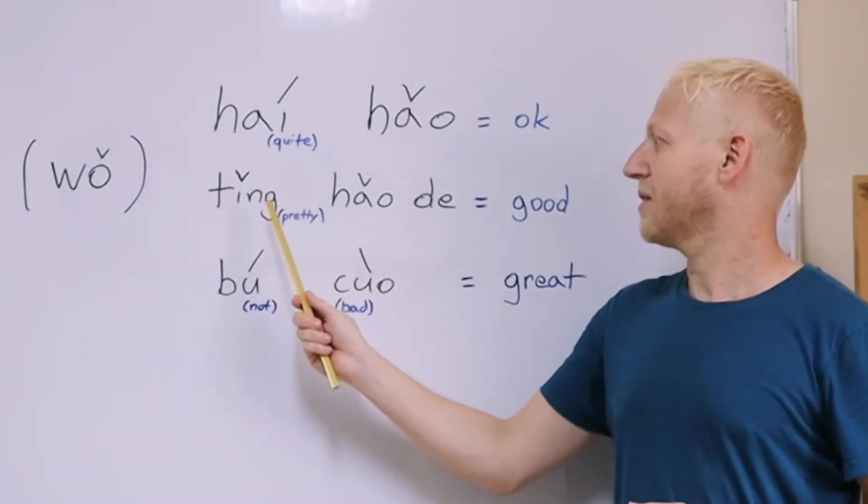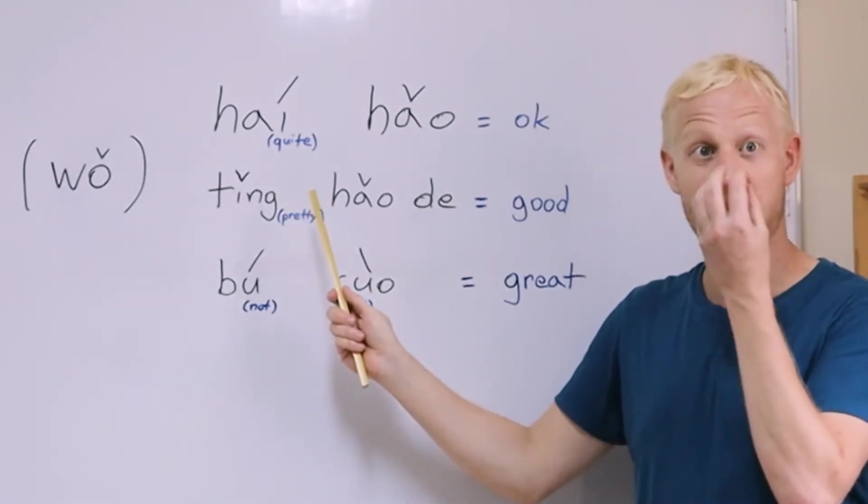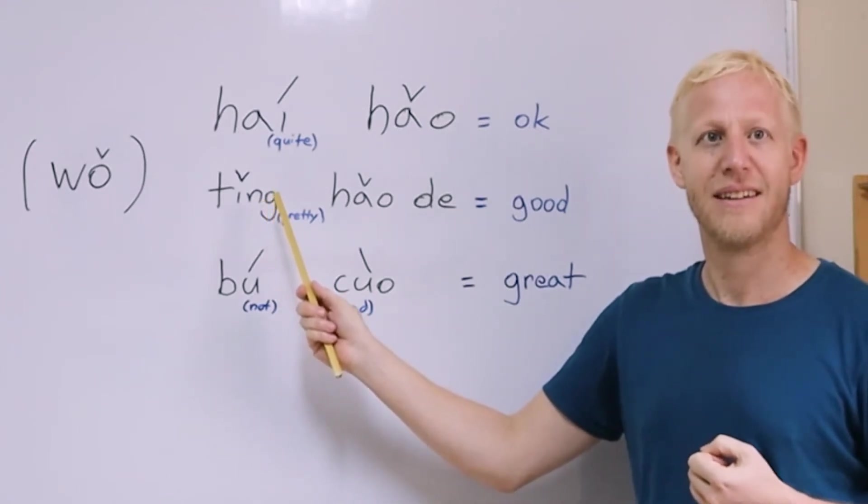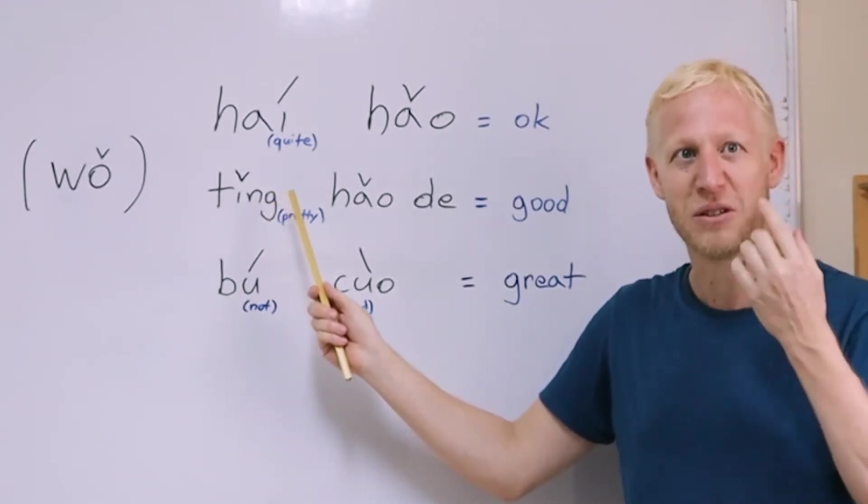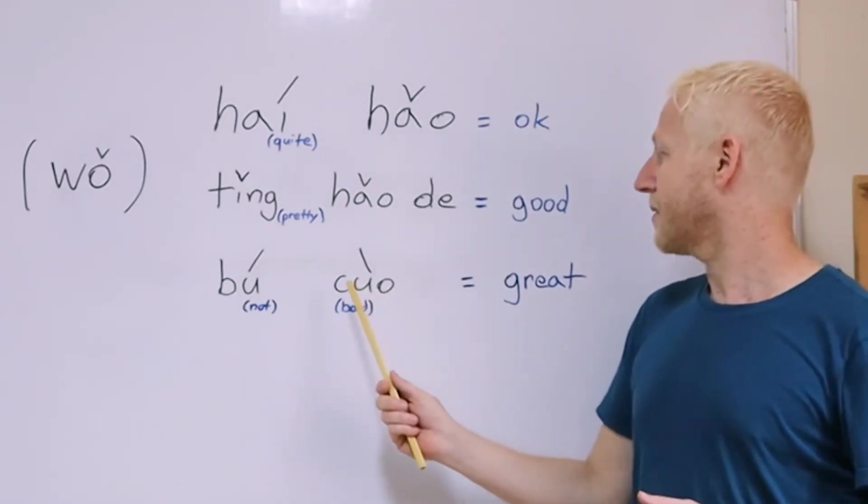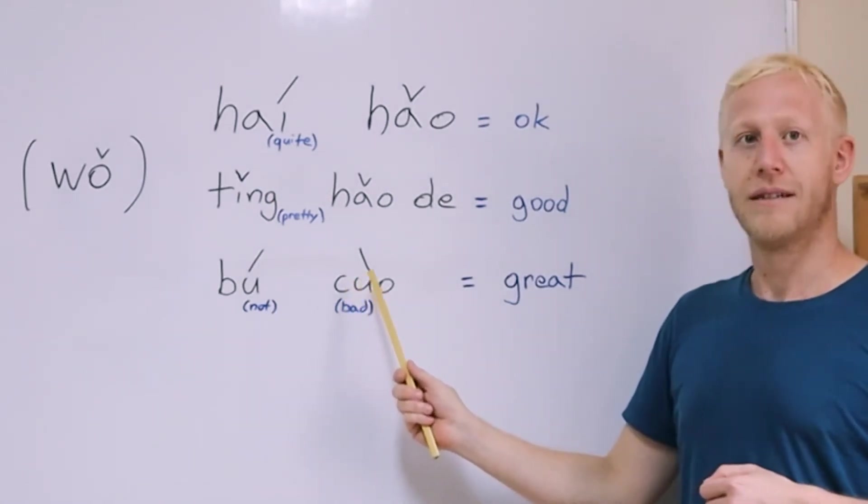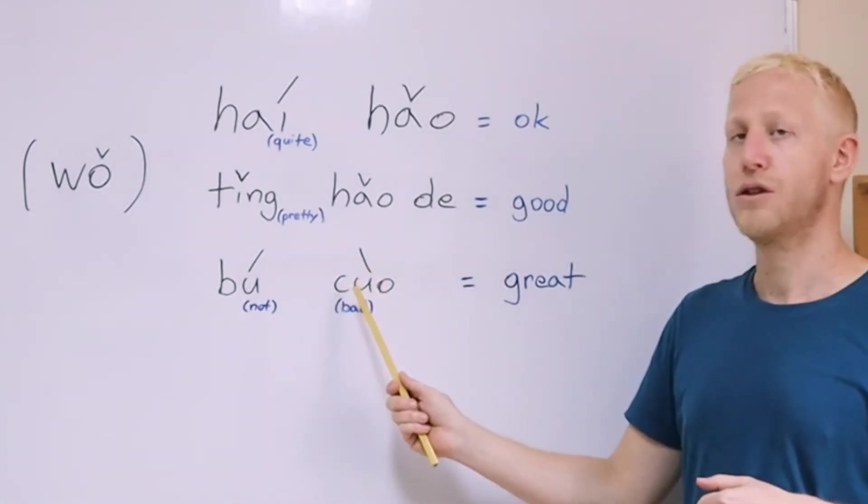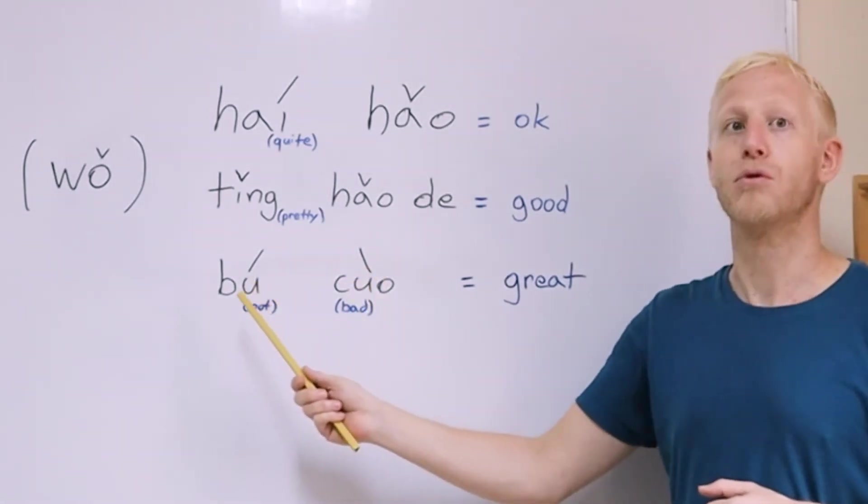If you remember the NG sound. It's like this very nasal N. So 挺. 挺. Like very much you're blowing through your nose. And the last thing. When you see a C at the beginning. It's a TS. Like a TS sound. 错. 不错.